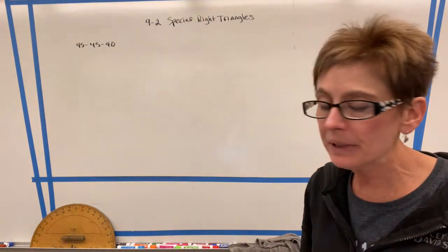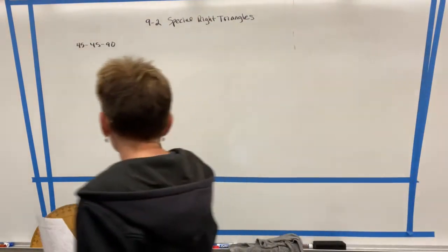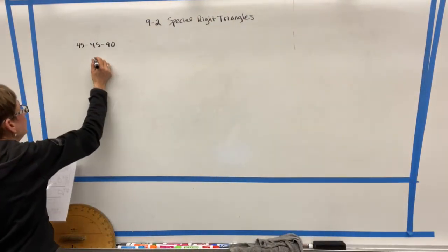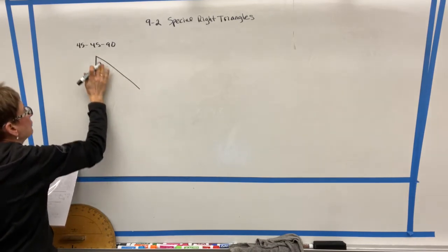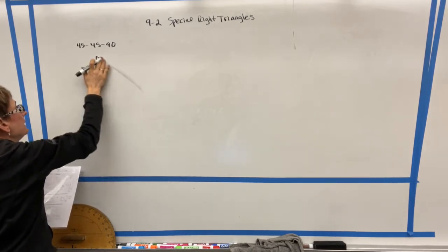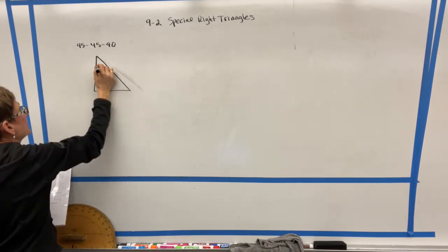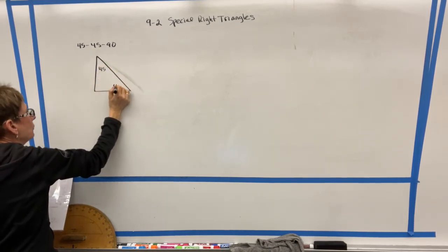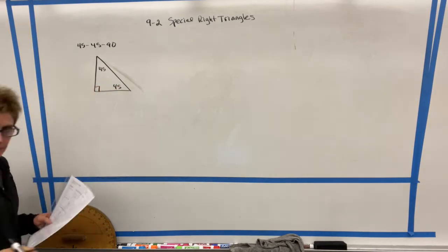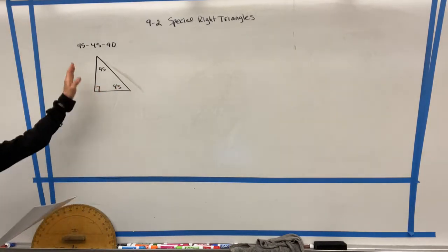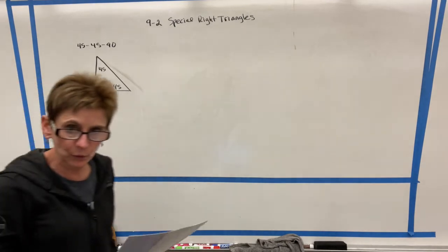One of them is called a 45-45-90. So the reason that a triangle is called a 45-45-90 is exactly what you might think. And that is because it has measurements of 45, 45, and 90 degrees. Now, they're not always going to mark all three angles for you.